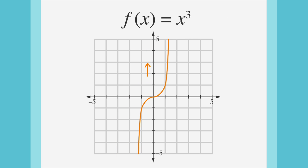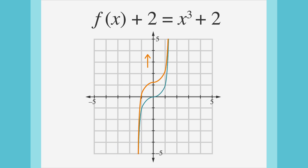In order to shift a function upward by 2, we'd add 2 to every y value. Algebraically, that would be adding 2 to the function outside of the parentheses. We just add 2 to the original function to get the new function x cubed plus 2. Since f of x is y, notice that the y values have been increased by 2.